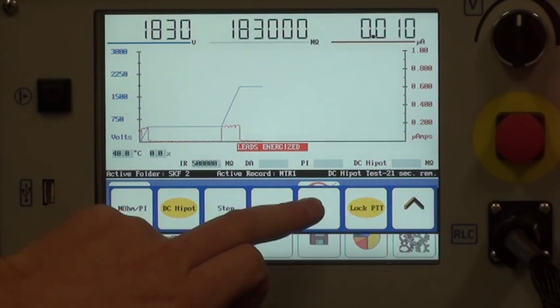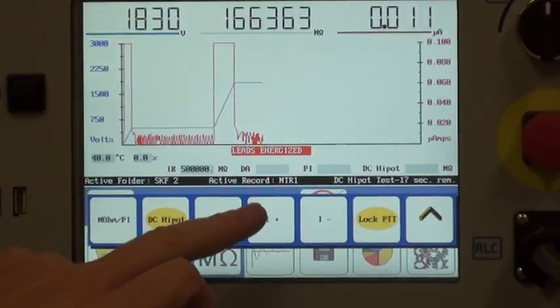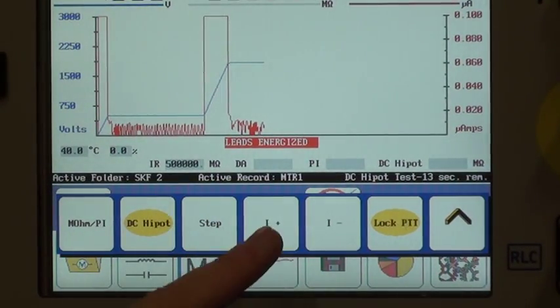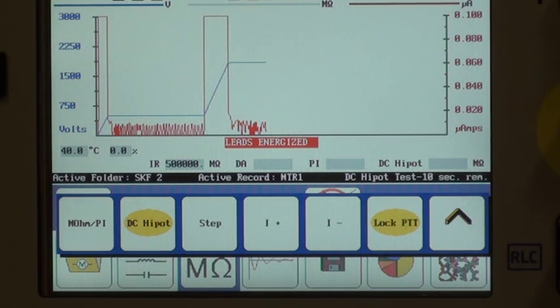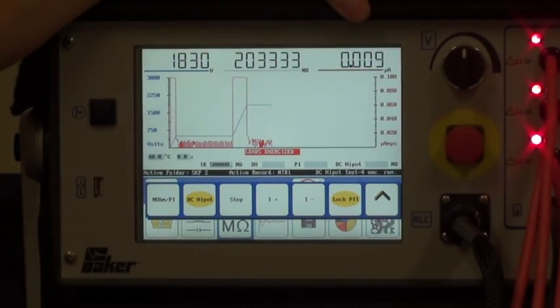Once again, the current leakage is adjustable, simply by activating the plus or the minus button on the screen here. As you can see, the megaohm value is very high but fluctuating, and the current leakage is very low.